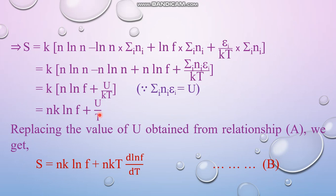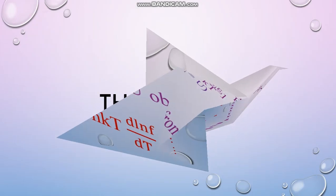We have obtained the expression for entropy: S equals Nk ln f plus U over T. Now U has its own expression in terms of f from the previous lecture — equation A — which was U equals NkT squared times d ln f over dT. Substituting this in place of U over T, the T cancels and we get S equals Nk ln f plus Nk T times d ln f over dT. This is the final expression of entropy in terms of the partition function, designated as equation B and highlighted in magenta. That's all for this lecture, thank you.